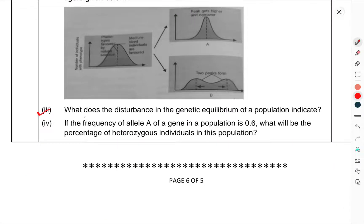What does the disturbance in genetic equilibrium of a population indicate? If the frequency of the allele 'A' as a gene in a population is 0.6, what will be the percentage of heterozygous individuals in this population?